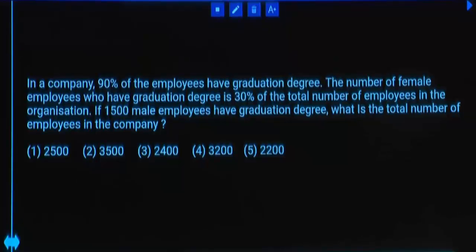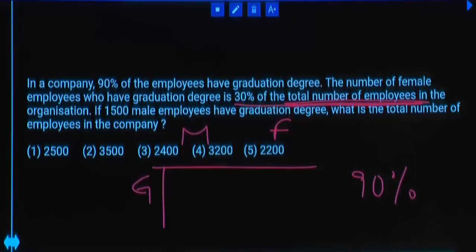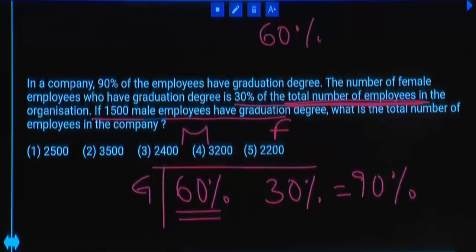The company, 90% of employees have graduation degree. Total we have 90% graduates with both male and female. The number of female employees who have graduation degree is 30% of total number of employees. Out of 100%, 30% are female. If total we have 90% graduates, if graduate females are 30%, male graduates are 60%. If 1500 male employees have graduation, what percent of males have graduation? 60%. That means 60% is equal to 1500.